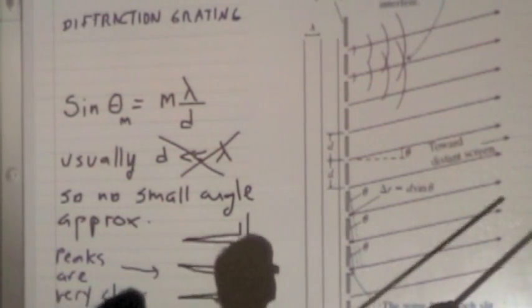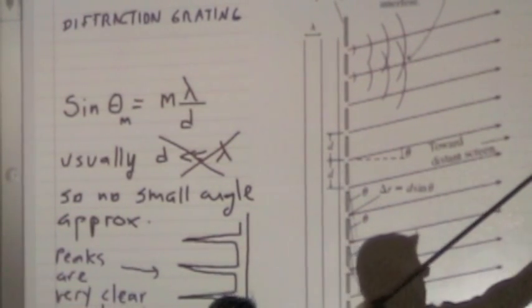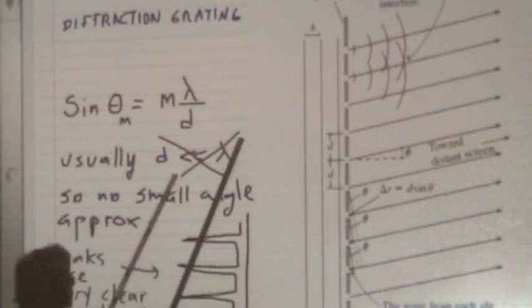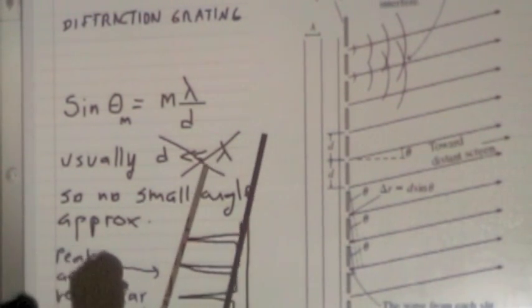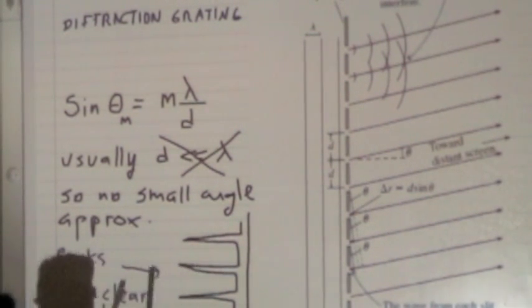So at that point in the screen where these two interfere constructively, everybody interferes constructively. So at those points on the screen where that condition is satisfied, you have a very bright spot.